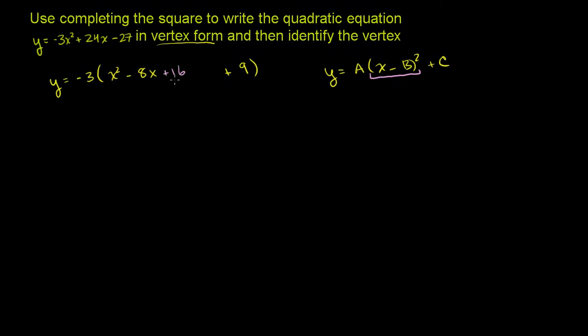But you can't just willy-nilly add a 16 there. You could either have to add a similar amount to the other side and scale it by the negative 3 and all of that, or you can just subtract a 16 right here. I haven't changed the expression. I'm adding a 16, subtracting a 16. I've added a 0. I haven't changed it. But what it allows me to do is express this part of the equation as a perfect square.